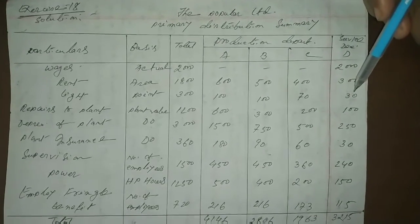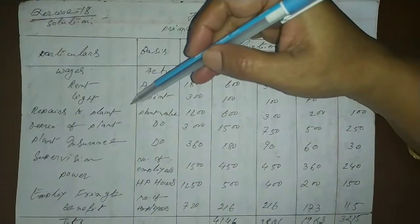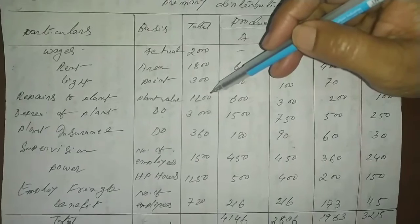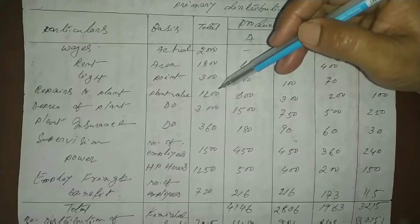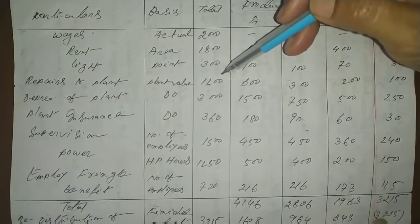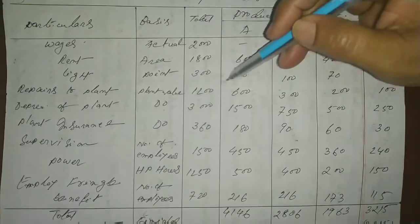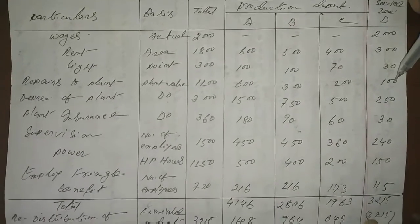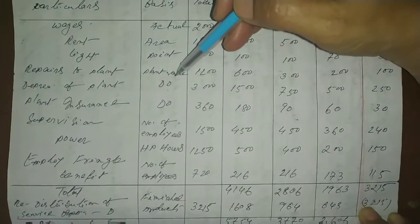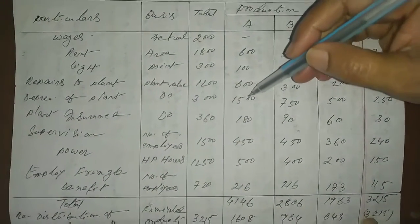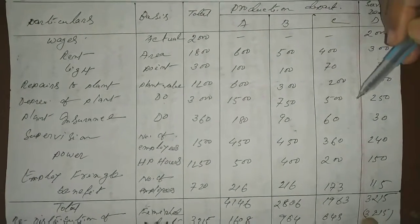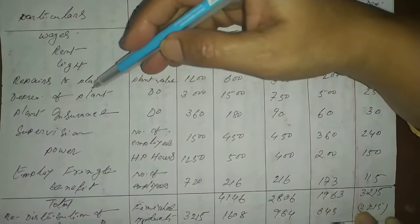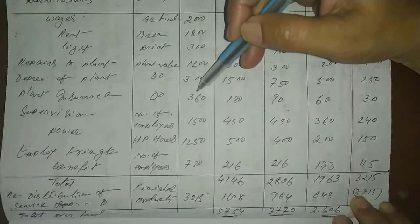Repair to plant: the value of the plant is used as the basis. Total is 1,200. Plant values: A is 3,000, B is 15,000, C is 10,000, D is 5,000. The total is 5,3. The calculated amounts are: A is 6,000, B is 3,000, C is 1,500, D is 750, with 500 and 250. My advice is to take care of 1,000.